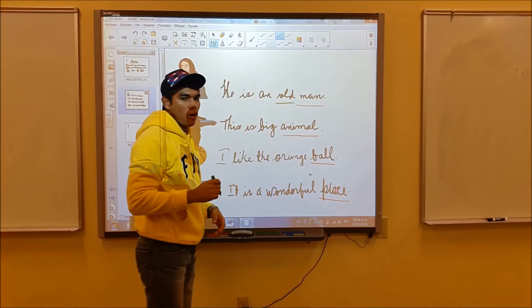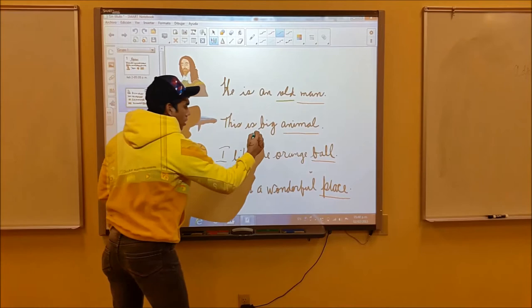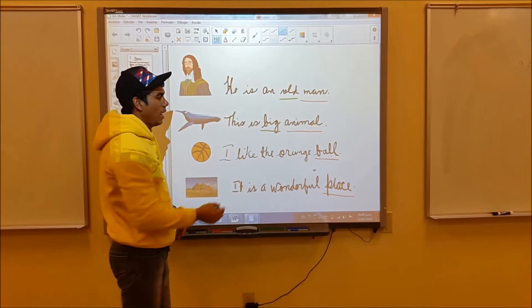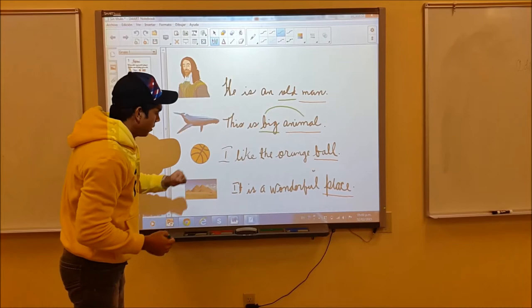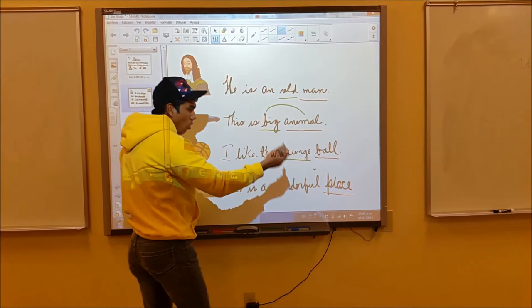Sentence number two: big. Big is working as an adjective in the sentence, and it is modifying the word animal. Sentence number three: my adjective is the word orange. Orange is also modifying the word ball because it's giving a description.